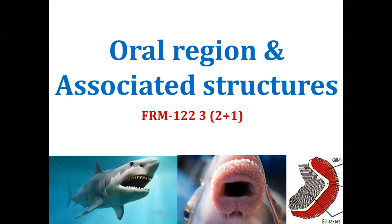We will discuss about the anatomy of the oral region, meaning the mouth, and what are the associated structures in the mouth like the teeth, jaws, and other adaptations associated with the oral region — the morphological modifications that are required to adapt for different feeding as well as different habitats of the fishes.